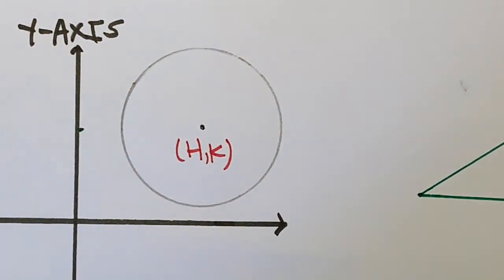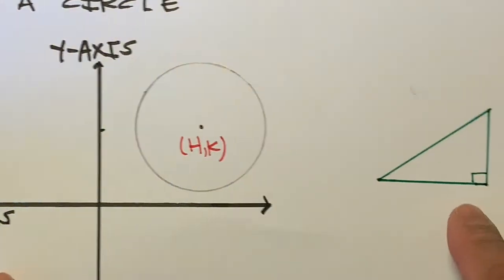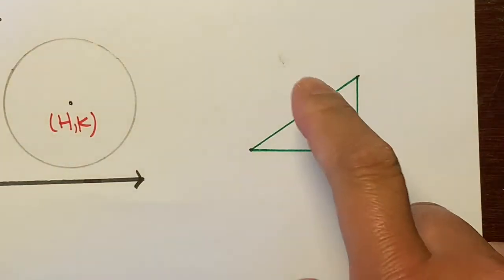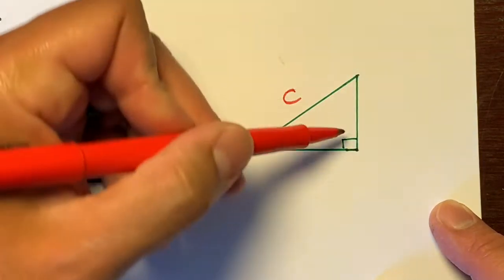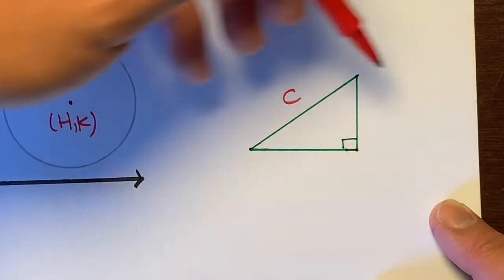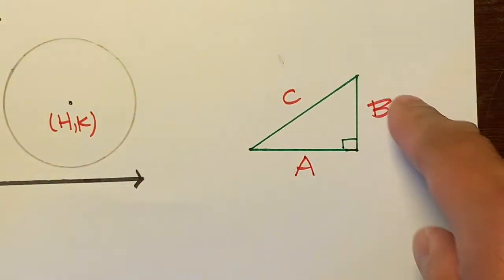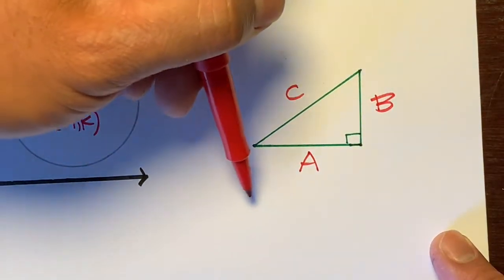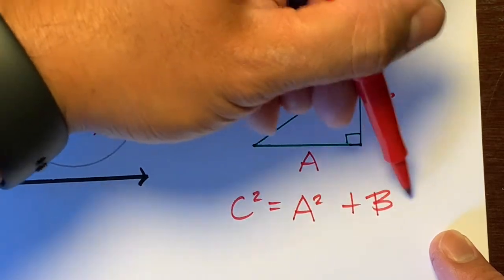We're going to use a theorem for another shape. We're going to use the Pythagorean theorem. If you guys remember what the Pythagorean theorem is, it's used for right triangles. If we were to apply the Pythagorean theorem to this right triangle, this would be our C because this is our hypotenuse. This is a leg right here, and this is another leg. The Pythagorean theorem is C squared equals A squared plus B squared.